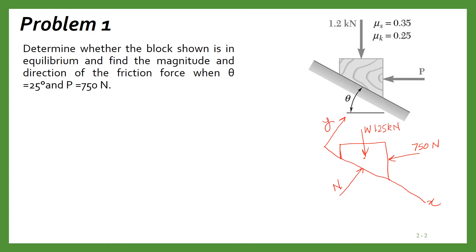Suppose this force P pushes the block in this direction, so the frictional force will act in the opposite direction to resist the motion. Now we can resolve these forces into the x and y directions — this force W and this force P. For that we need the angles, so this angle is given as theta which equals 25 degrees.